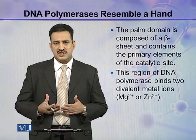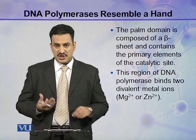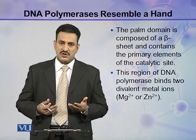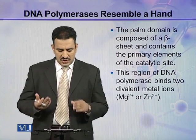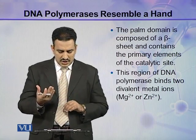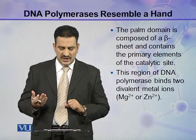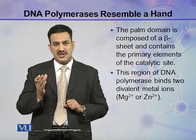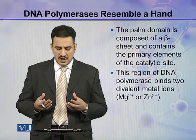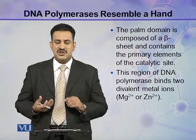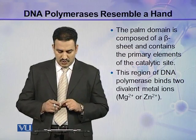Let us see the working of these three domains. The palm domain is composed of a beta sheet — you know about the beta pleated sheet in the structure of proteins. This palm domain contains the primary elements of the catalytic site. In the active site of the enzyme, there is one binding site and one catalytic site, and this palm contains the primary elements of the catalytic site of DNA polymerase.